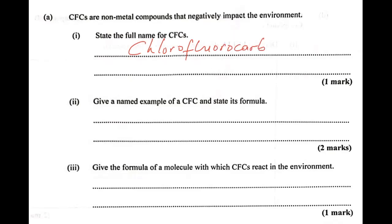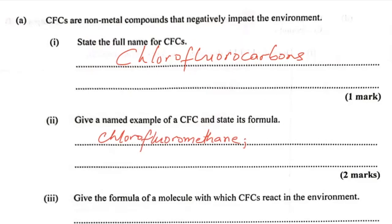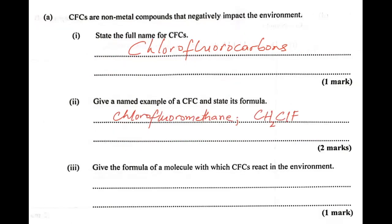Give a named example of a CFC and state its formula. One example of a CFC is chlorofluoromethane. Its formula is based on methane, but with two of the hydrogens substituted — one with chlorine and one with fluorine — giving us CH₂ClF.